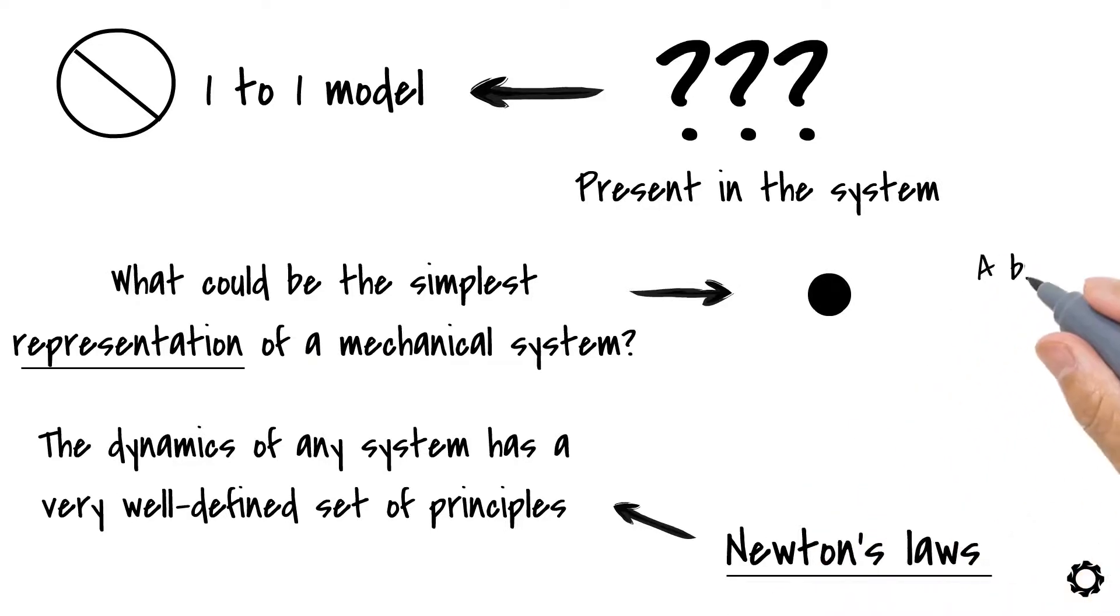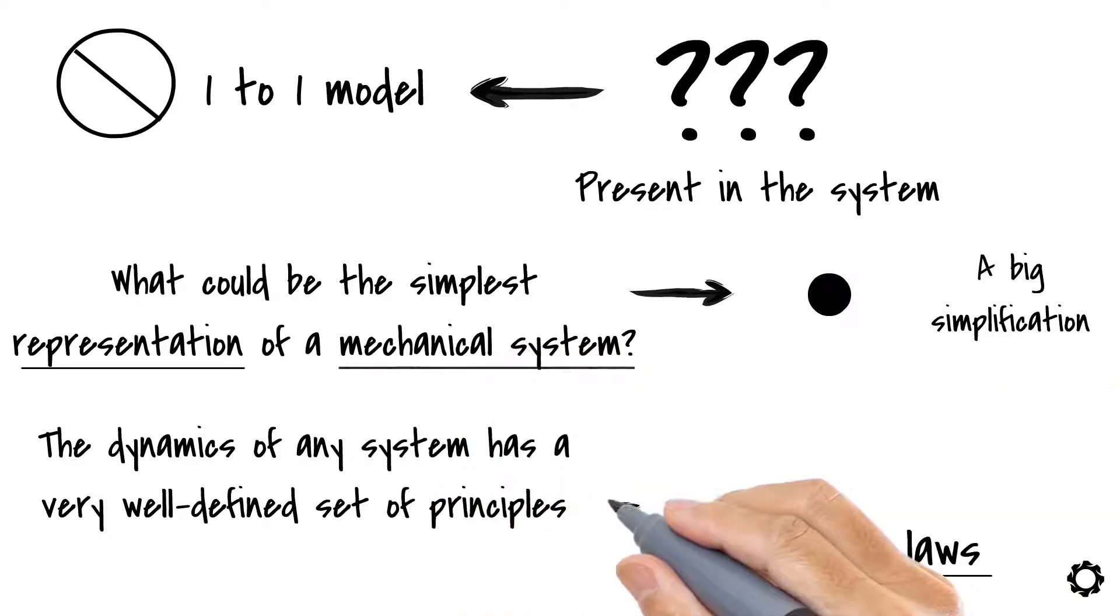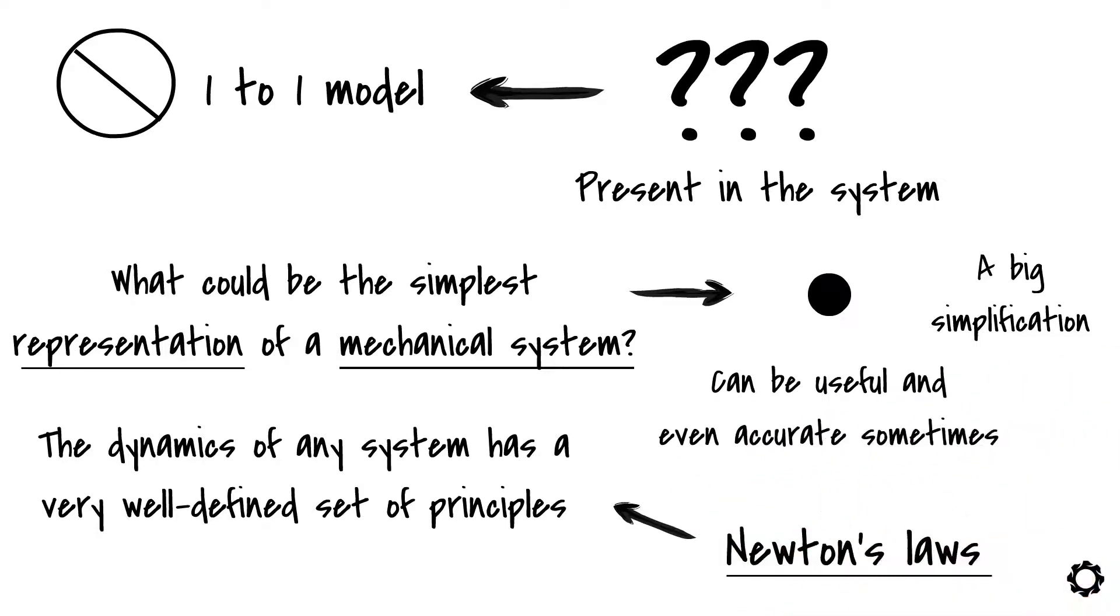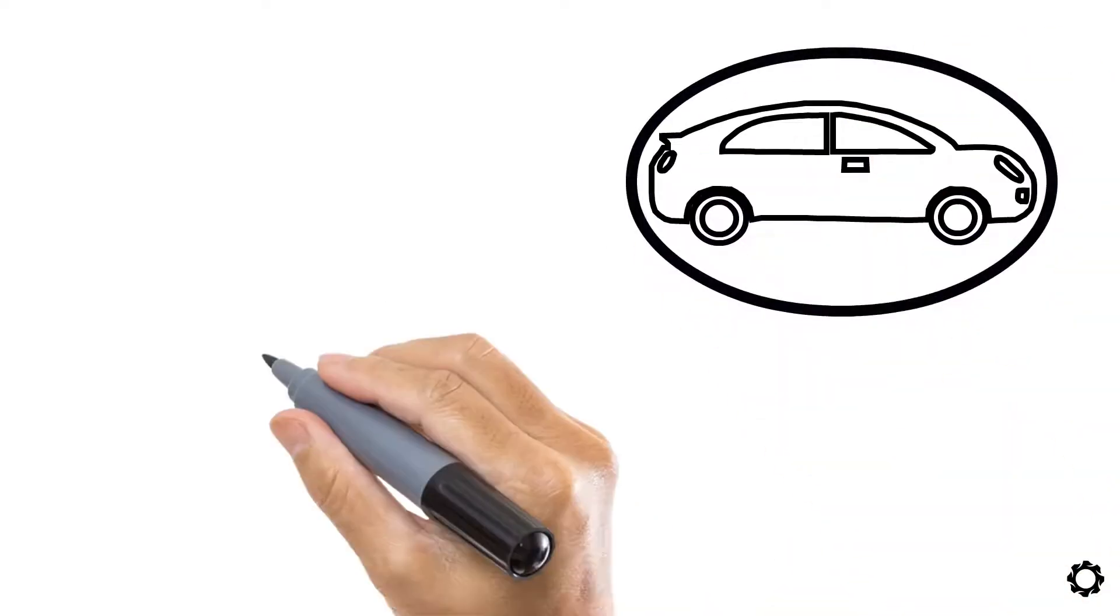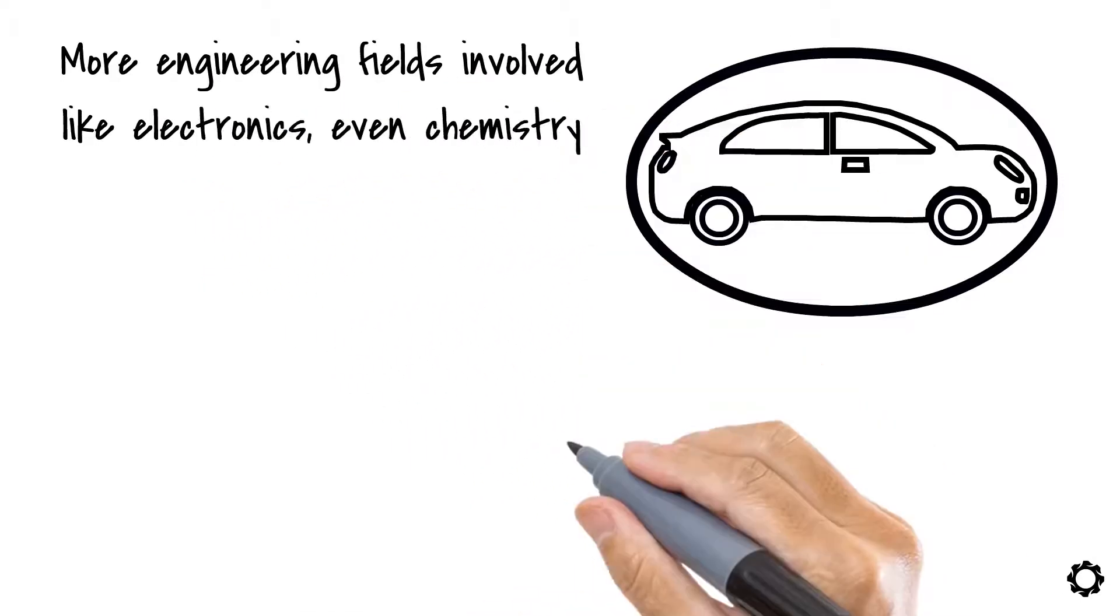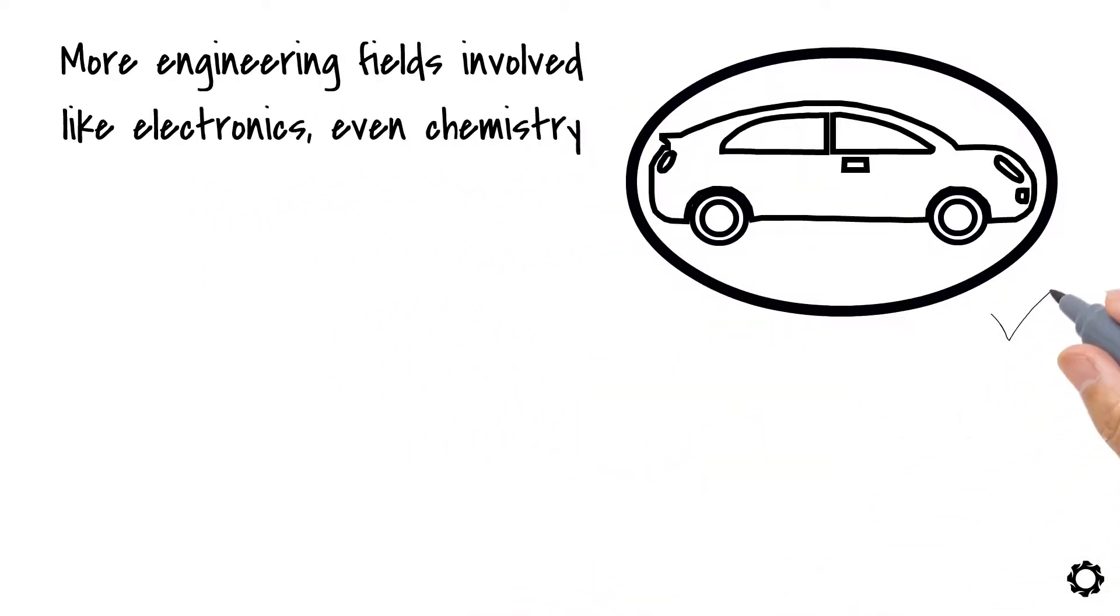This representation is a big simplification of a mechanical system, and still, it can be useful and even accurate sometimes. Let's take a look at one common example – a car. We all know that in a car there are more engineering fields involved like electronics, even chemistry. But let it be our mechanical system.